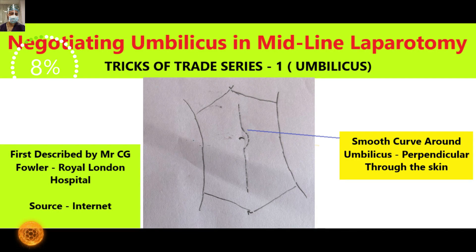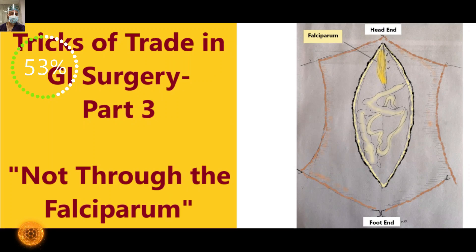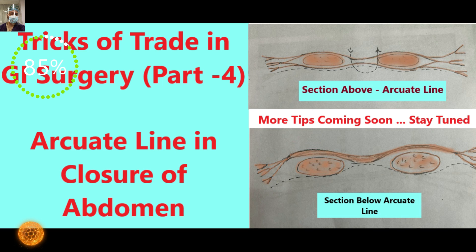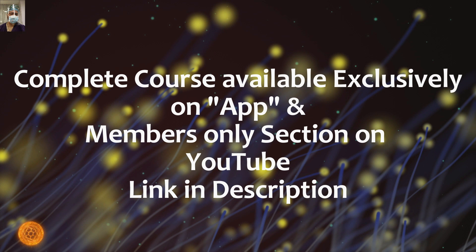As a quick recap of this series: we have already covered how to negotiate the midline using the incision technique for finding the linea alba in obese and morbidly obese patients, how to have bloodless access to the linea alba and negotiate the falciform ligament, and a live demonstration during surgery. The fourth video covered the anatomical importance of the arcuate line in closure of midline wounds.